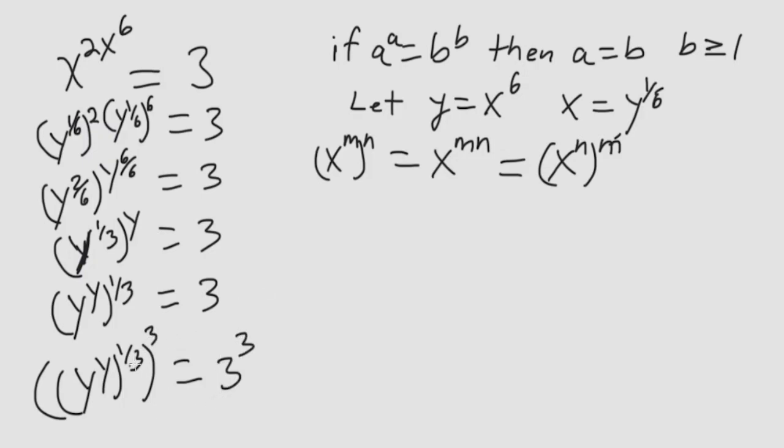So now I multiply across like I did here. So you have y to the y, 1 third over 1 third, this cancels out. So you have y to the y equals 3 to the 3.